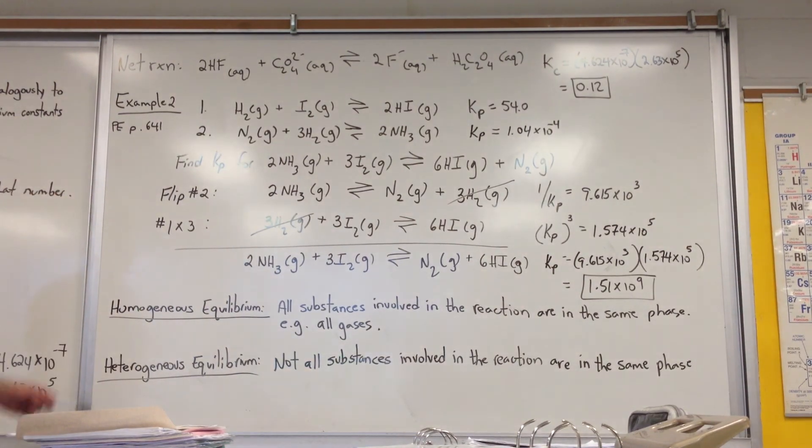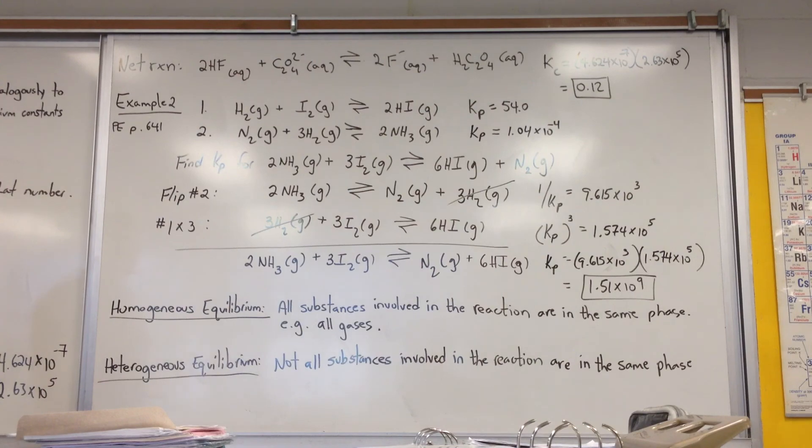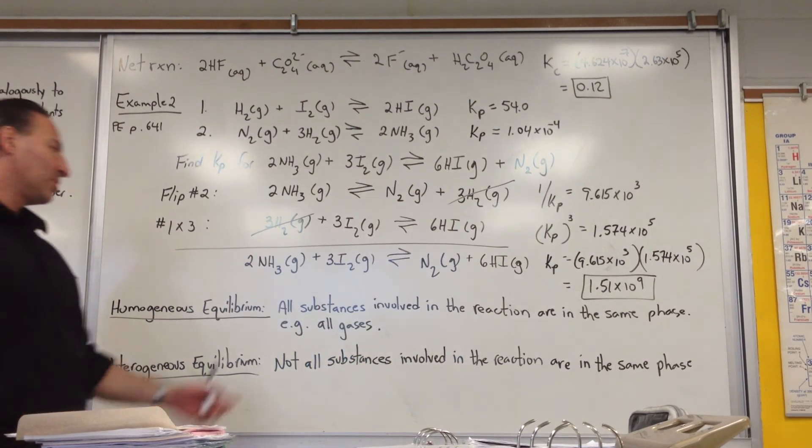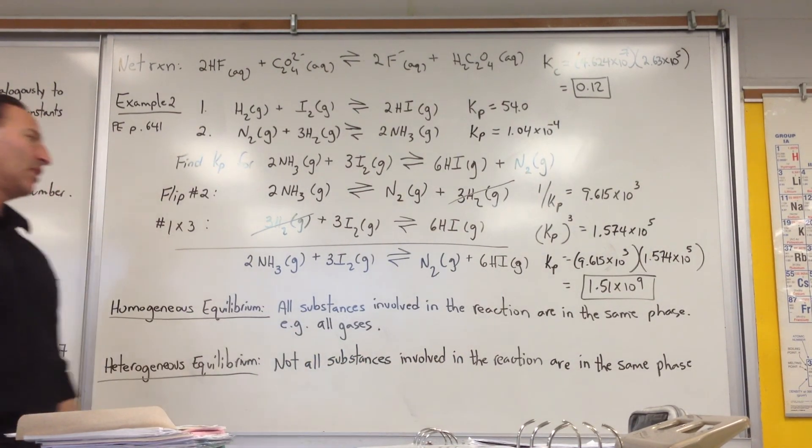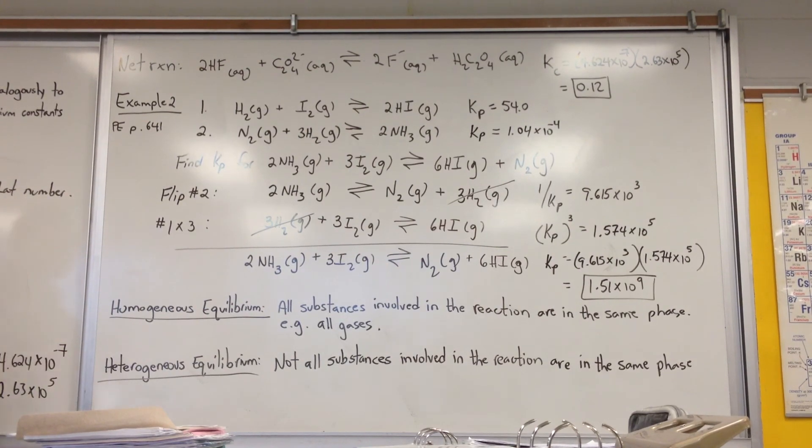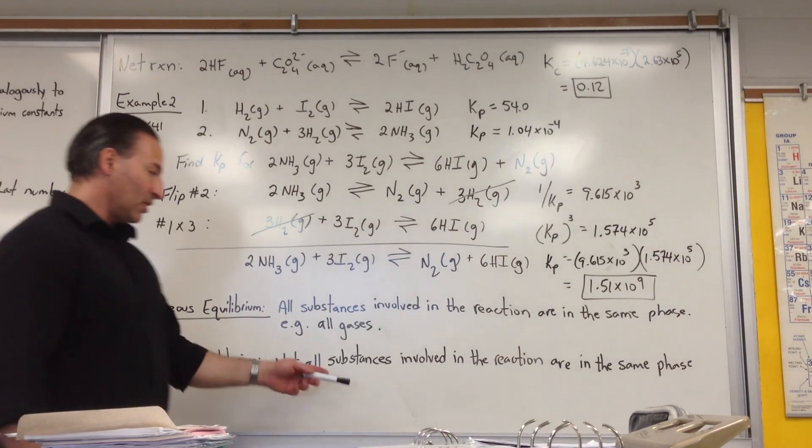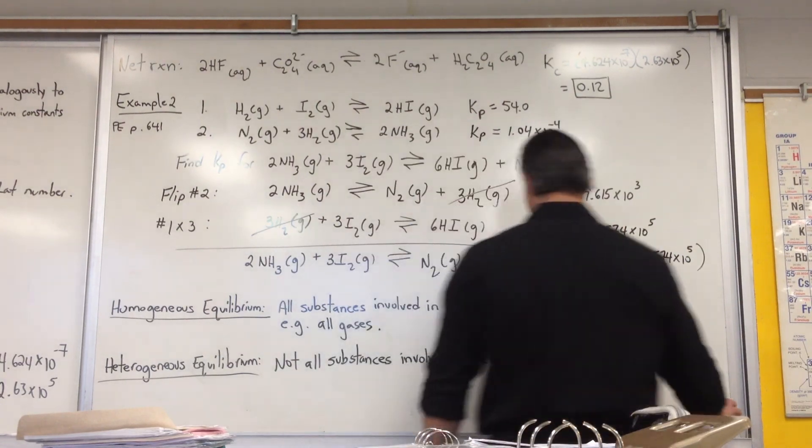Brings us to the next subject. There are two types of equilibrium: homogeneous equilibrium and heterogeneous equilibrium. Homogeneous equilibrium simply means that all the substances involved in the reaction are in the same phase. Whereas with heterogeneous equilibrium, not all the substances involved in the reaction are in the same phase.